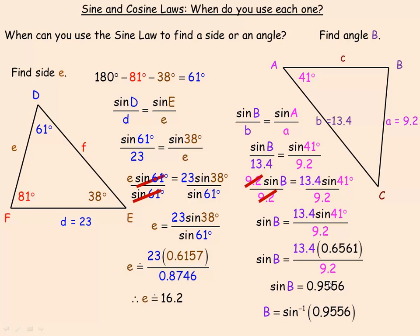To find angle B, we take the inverse sine of 0.9556, which is about 73 degrees. To recap: using the sine law, you need to know an angle-side pair. If you're finding an angle, you have to know the opposite side; if you're finding a side, you need to know the opposite angle. It's always an angle-side pair, and to find anything you need to know the opposite thing.